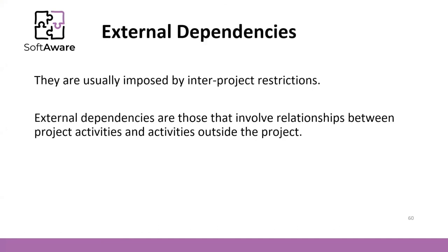Finally, we have external dependencies, usually imposed by inter-project restrictions, involving relationships between project activities and activities outside the project. To wrap up this video, we talked about the network diagram, Activity on Arrow, and the Precedence Diagram, and we learned how to build them. We will talk about how to use them to calculate the critical path and the slack in the next video.